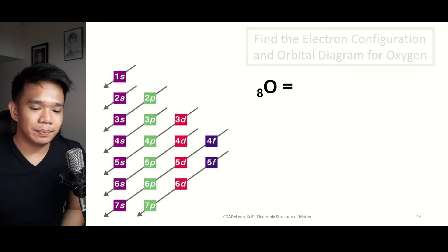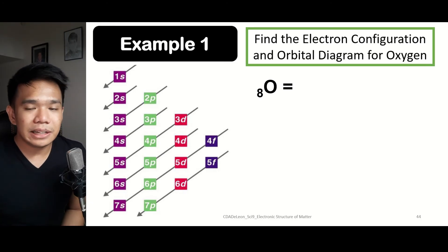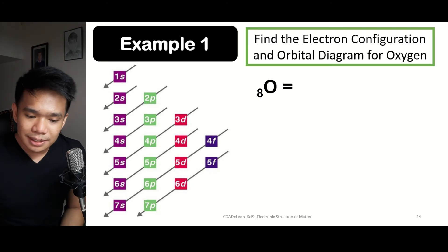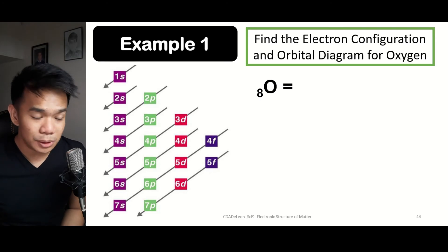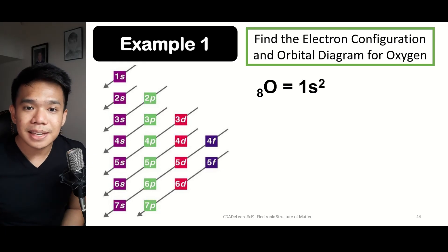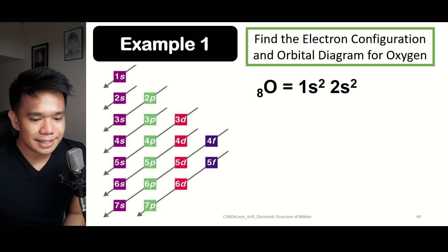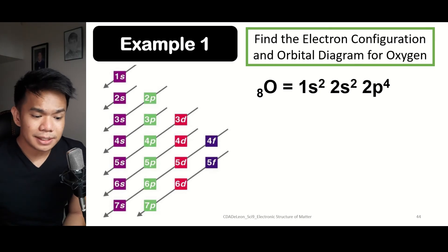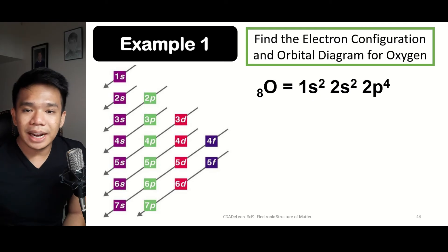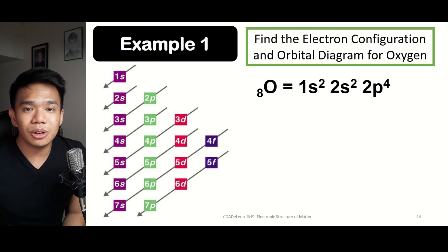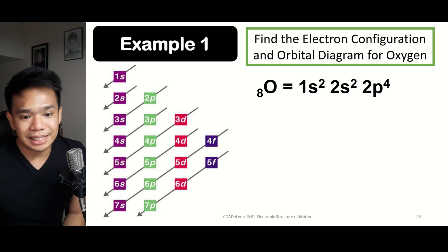Let us look at the electron configuration for oxygen, which has an atomic number of 8. We start with 1S2, since the S sublevel holds two electrons. Next, 2S2 in the second energy level at the S sublevel. Lastly, 2P4 — still in the second energy level but on the P orbital. We did not use 6 because 2 plus 2 plus 4 equals 8, matching oxygen's atomic number. Therefore, the electron configuration for oxygen is 1S² 2S² 2P⁴.